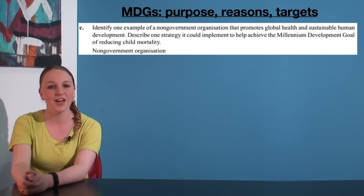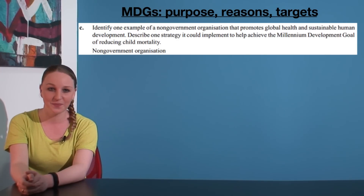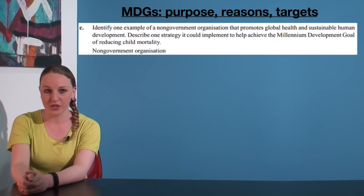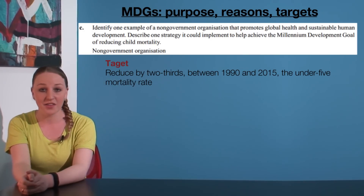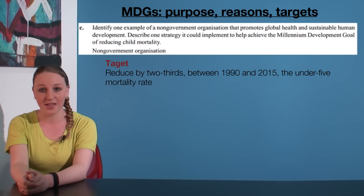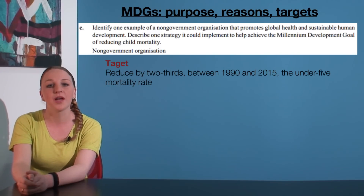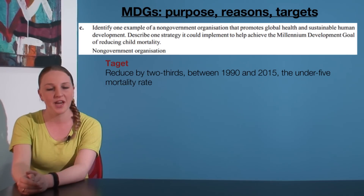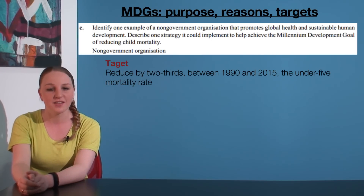It just so happens that MDG 4 only has one target, so let's focus on that. The target is as follows: reduced by two-thirds between 1990 and 2015, the under-5 mortality rate. In our response, we could emphasise how the non-governmental organisation — let's call it Generic NGO for now — could contribute to this.